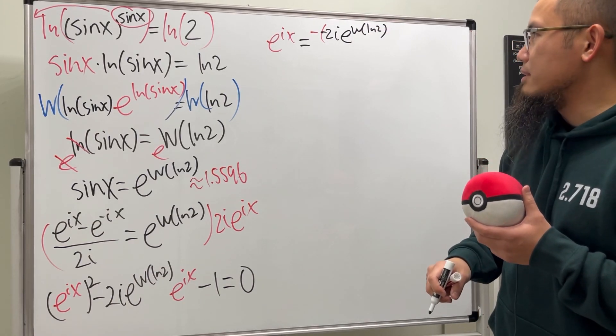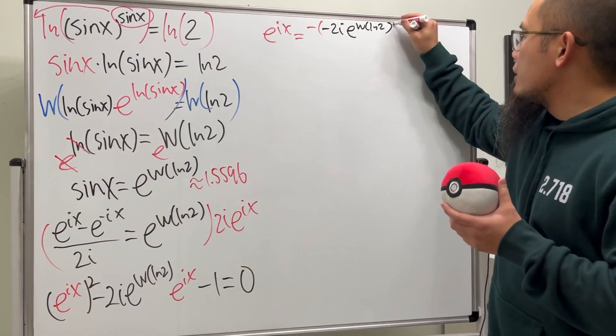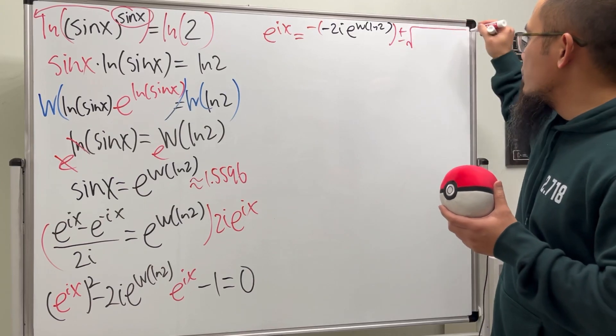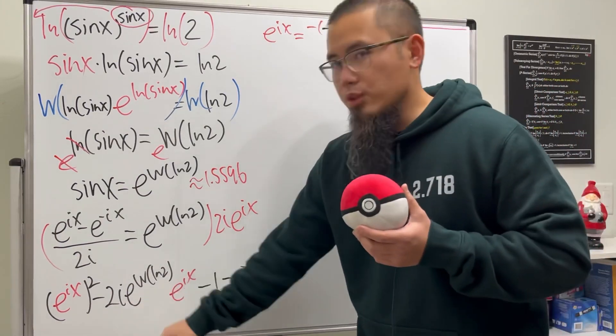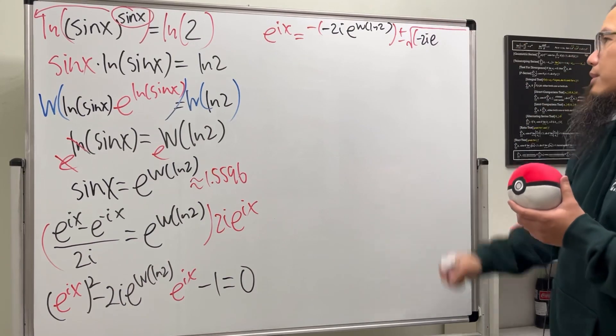I don't know if I have enough space. Of course, the plus or minus square root, and we have to do the b squared, which is going to be negative 2i e. Wow, that's not my way to write.